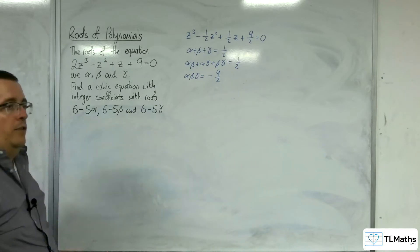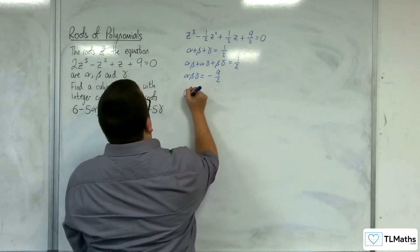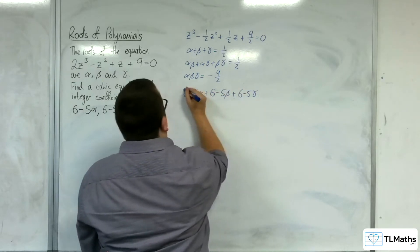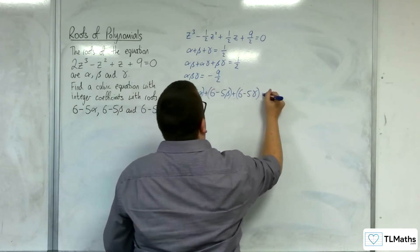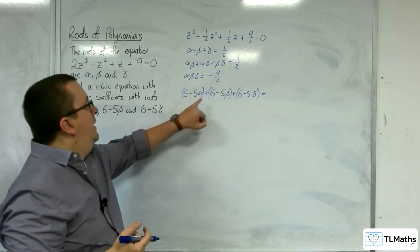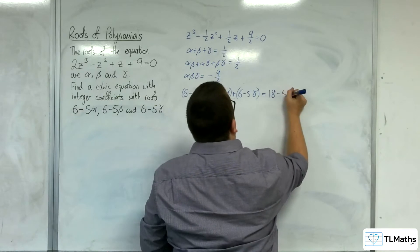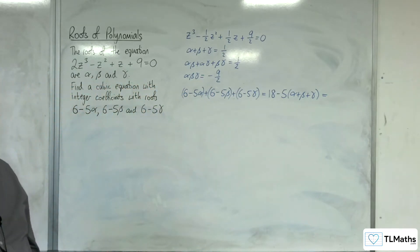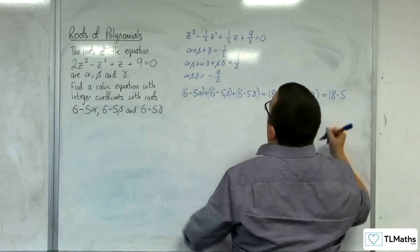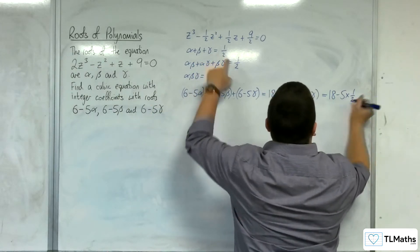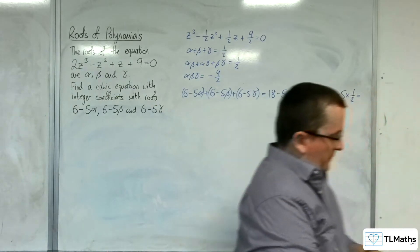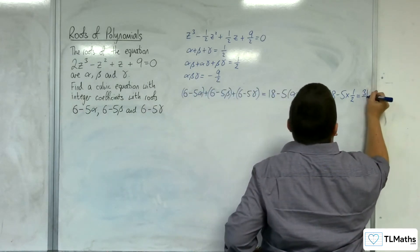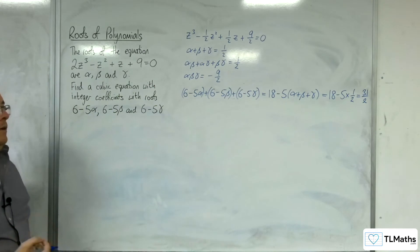Next, we need to find the sum of our three new roots: (6 take away 5 alpha) plus (6 take away 5 beta) plus (6 take away 5 gamma). That gives 18 take away 5 lots of (alpha plus beta plus gamma), which is 18 take away 5 lots of one half, giving us 31 halves. So that's the sum of the three new roots.